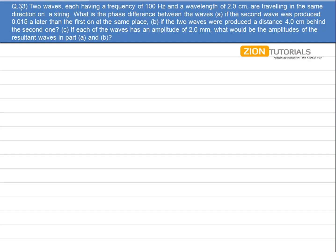Two waves, each having a frequency of 100 Hz and wavelength of 2 cm, are traveling in the same direction on the string. What is the phase difference between the waves if the second wave has produced 0.015 second later than the first on the same place?